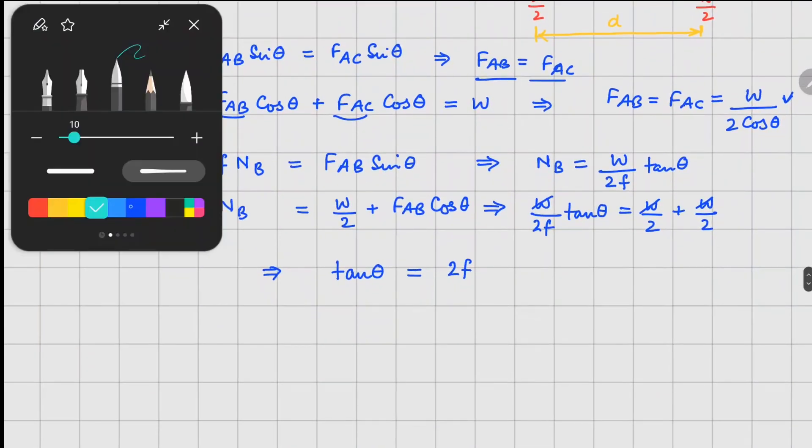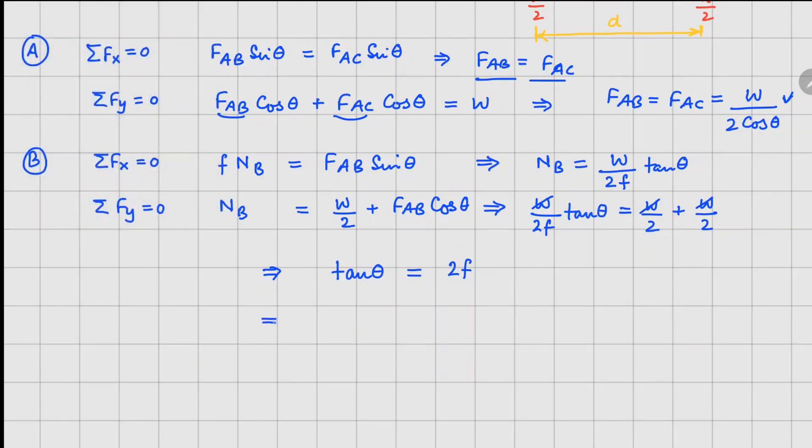we can write a relationship for this is d over 2, this is 2r, and this one is theta. So you can see that 2r sin theta is equal to d divided by 2. So this means your d is equal to 4r sin and if I replace theta as tan inverse of 2F, I have a relationship for d in terms of your coefficient of friction and distance r.